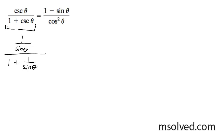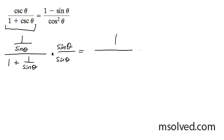Now what we're going to do next is multiply through by sine theta — so both of these. What this is going to do is convert the top into 1, and the bottom is going to become sine theta plus 1.